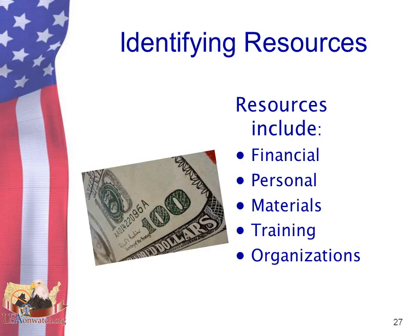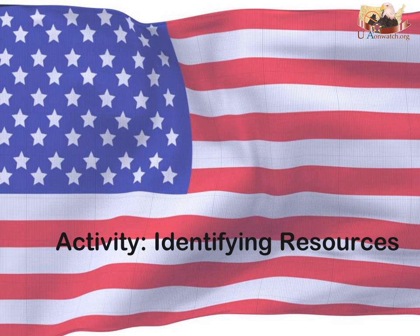Now let's talk about resources. Here are some of the resources to consider: financial, personal, materials, training, and organization. Financial resources can include both individual and outside agency resources. Personal resources can include individual skills or talents. Materials can range from training materials to building materials. Training resources can come from individuals or outside agencies such as your local law enforcement organization. Don't forget other organizations in your community — civic, social, and service groups such as Kiwanis or Rotary can provide everything from speakers to volunteers. Building partnerships within your community can add strength to your neighborhood watch group.